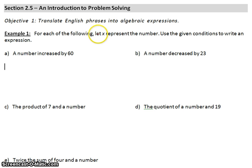Example 1, for each of the following, let X represent the number. Use the given conditions to write an expression. It says here, a number increased by 60. We were told that we're going to let X represent the number. So, a number is X.